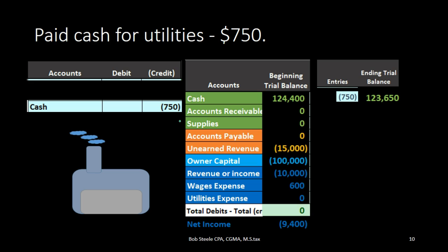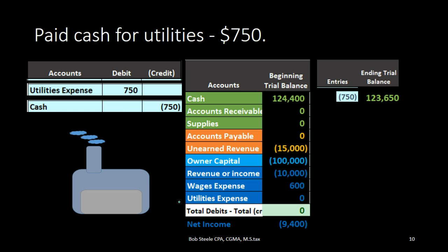We've got utilities. Looking at our trial balance, we find utilities expense down in the expense area, part of the income statement. Expenses are going to be debited because we credited cash, and expenses are pretty much always debited — they always go one way. We only pay the utility bill; the utility company never generally pays us. So we record a $750 debit to utilities expense, bringing utilities expense up to $750.